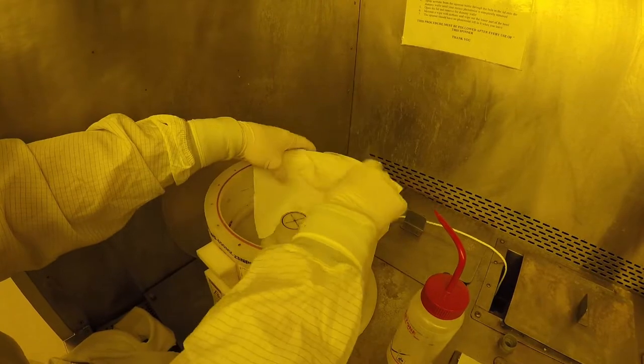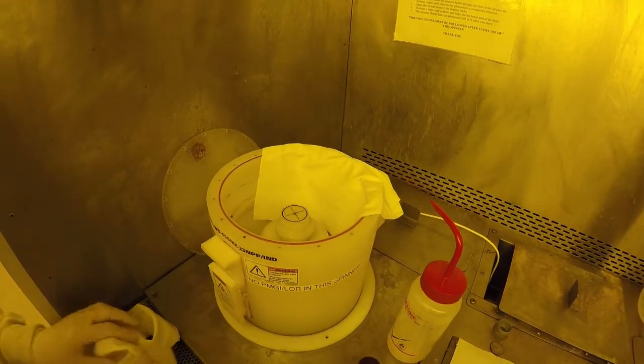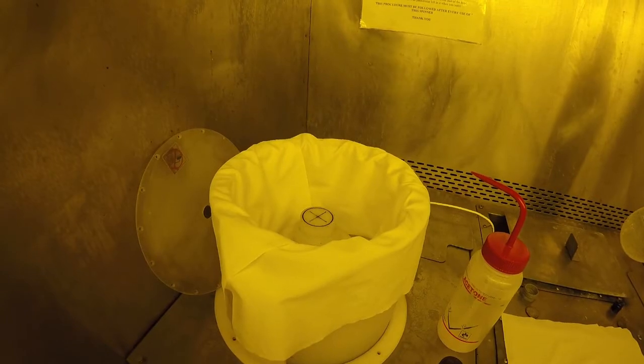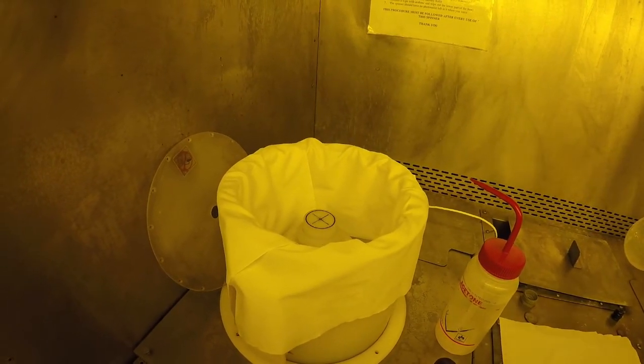There are a number of spinners. Some are dedicated for particular types of photoresist and solvents. Please pay attention to all posted signage. To use a spinner, first sign into the log sheet, then line the spinner bowl with foil or wipes. Now the spinner is ready for your recipe.